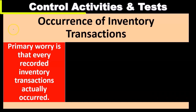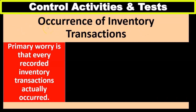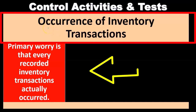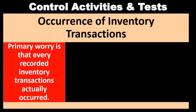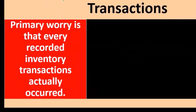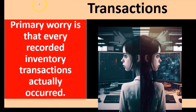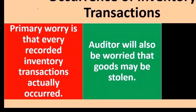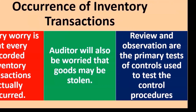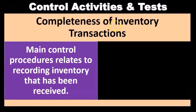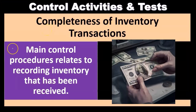Now we're considering inventory transactions, looking first at the assertion of occurrence. The primary worry of the auditor is that every recorded inventory transaction actually occurred. If a transaction was recorded, we're worried it actually happened — did the actual occurrence take place? We're concerned about whether a transaction was just made up and didn't actually happen. The auditor will also be worried that goods may be stolen — that's another concern within occurrence. The primary tests of controls will be review and observation.